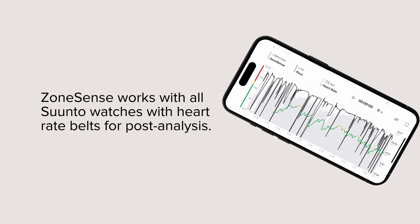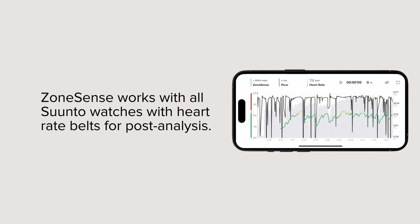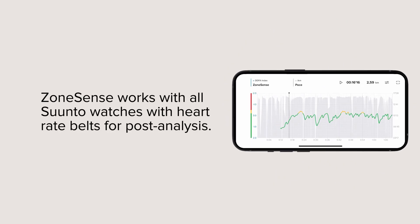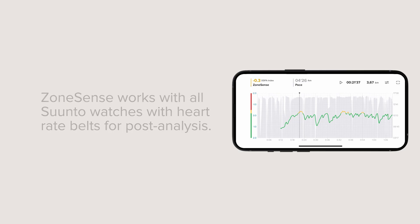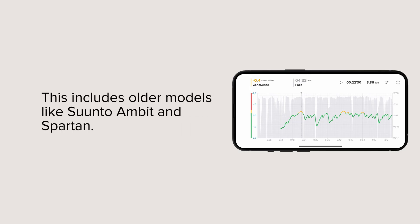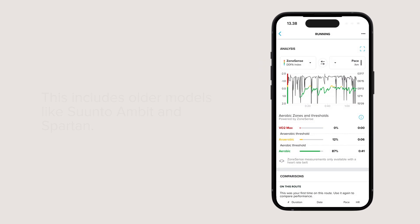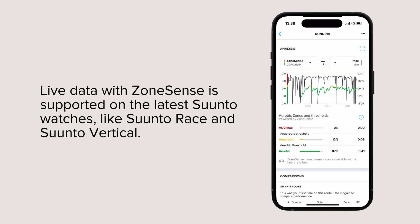ZoneSense works with all Suunto watches with heart rate belts for post-analysis. This includes older models like Suunto Ambit and Spartan. Live data with ZoneSense is supported on the latest Suunto watches, like Suunto Race and Suunto Vertical.